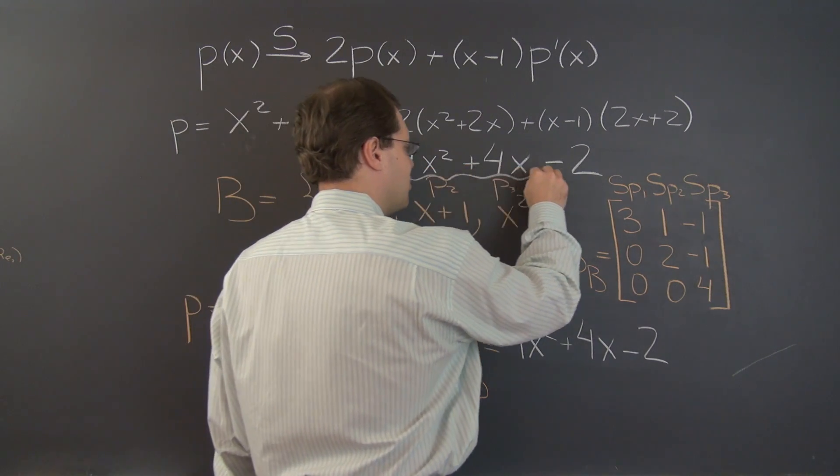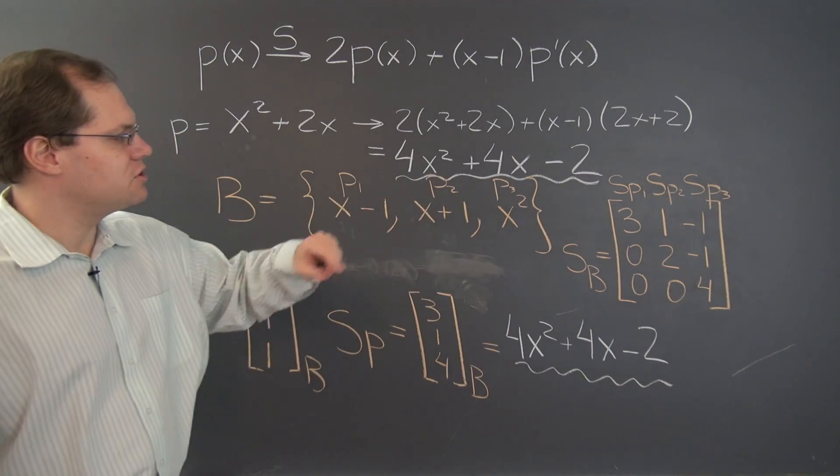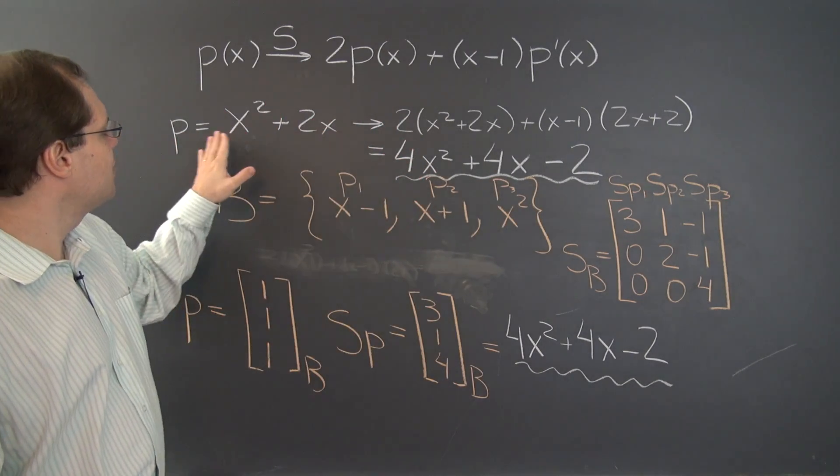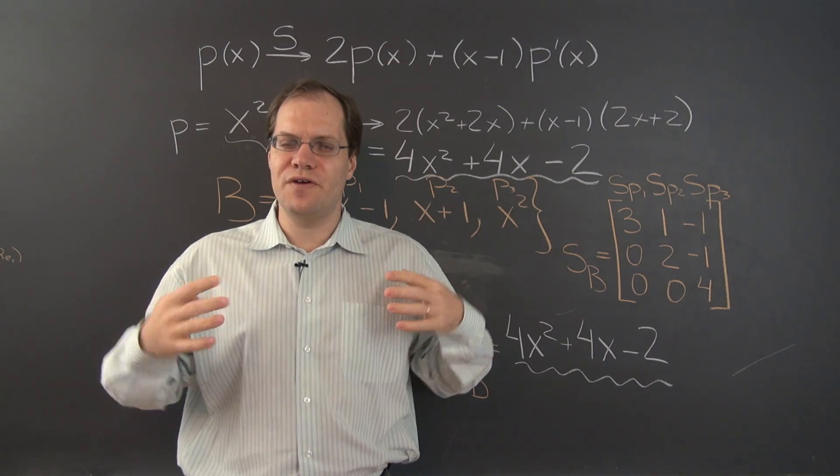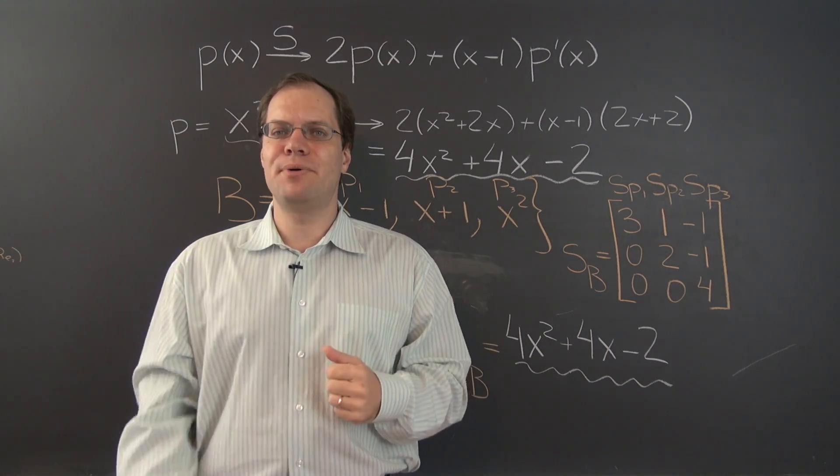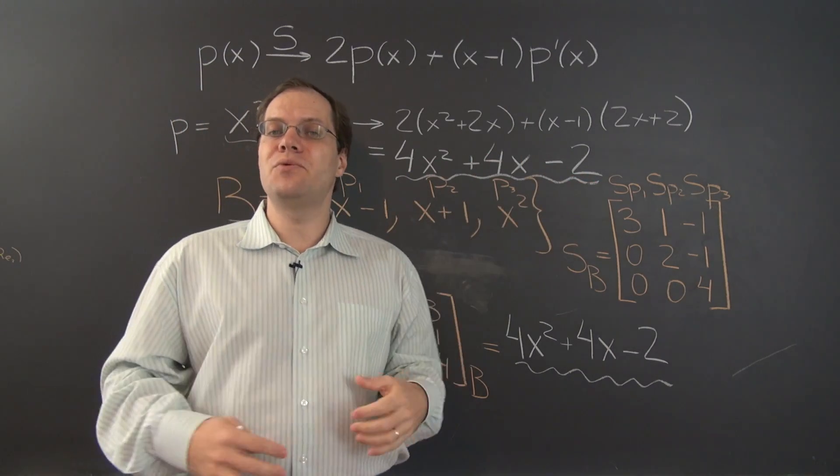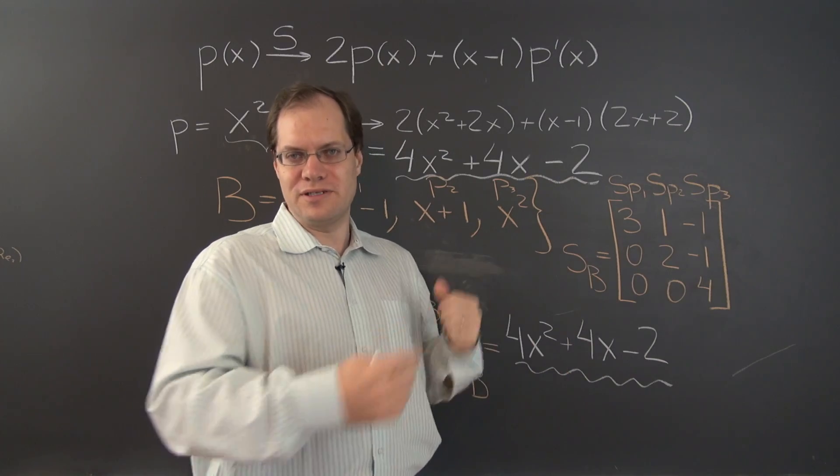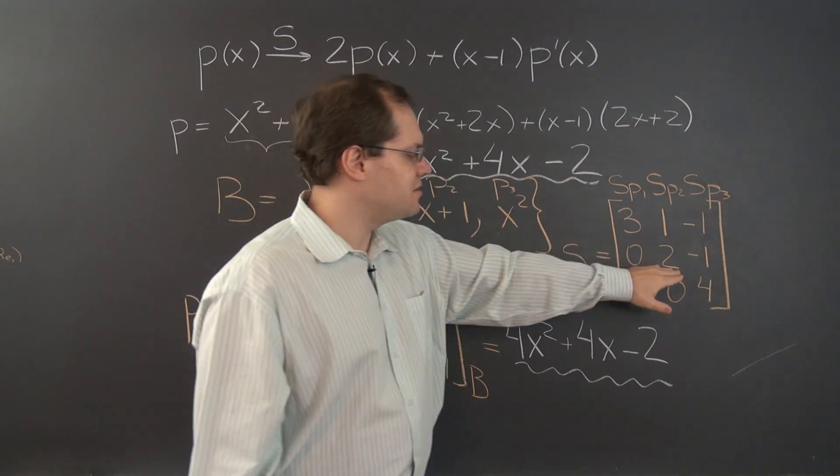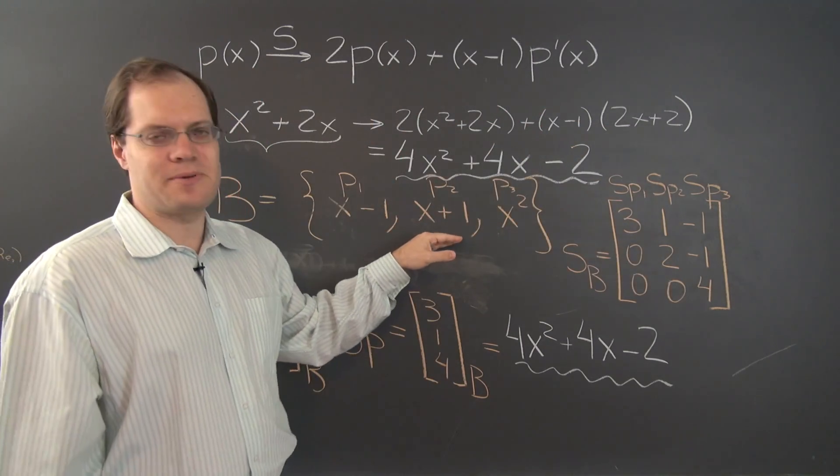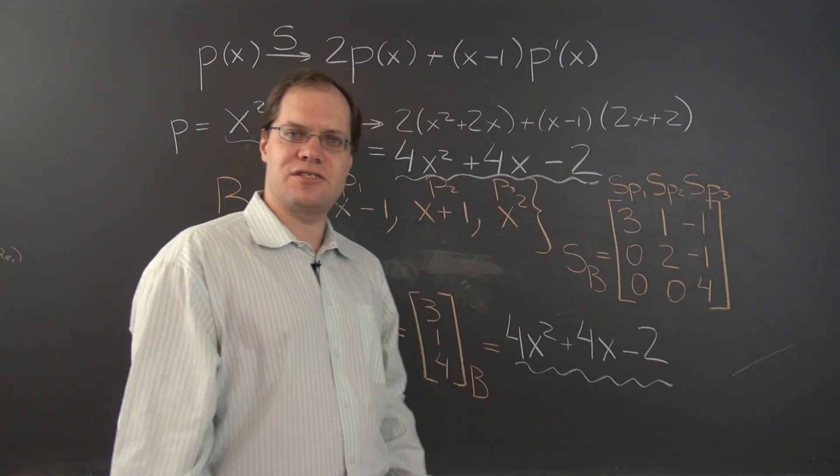The exact same polynomial as before. So just to review, what we started out doing is evaluating this transformation applied to this polynomial right here. And when we did it without the use of any basis or any component spaces, we evaluated it directly and got this answer. Then we made a foray into the component space. And for that we chose a basis.